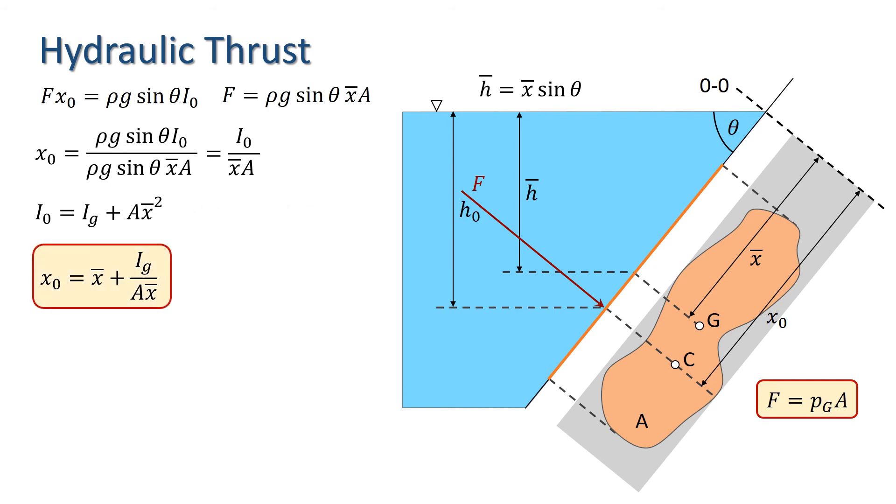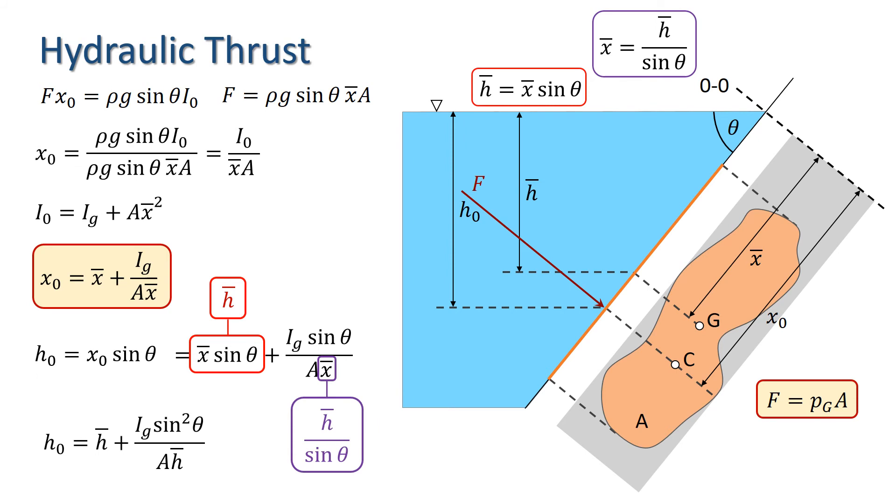We can use this equation directly or we can rewrite it in terms of pressure head. We know that H0 equals X0 times sin theta. Substituting for X0, we have X bar sin theta plus IG sin theta over A X bar. Finally, noting that X bar sin theta is H bar, we get the formula H0 equals H bar plus IG sin squared theta over A H bar.